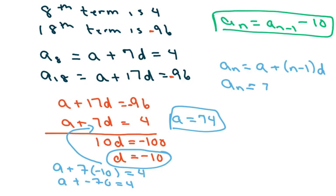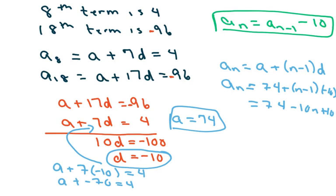So we're going to get 74 plus n minus 1 times negative 10, which gives 74 plus negative 10n plus 10, and so that's going to be negative 10n plus 84. That equals your nth term.